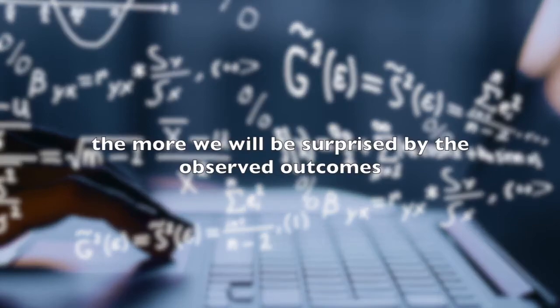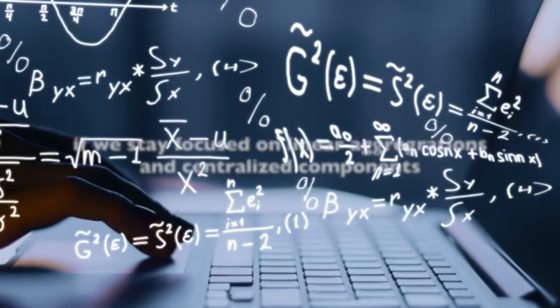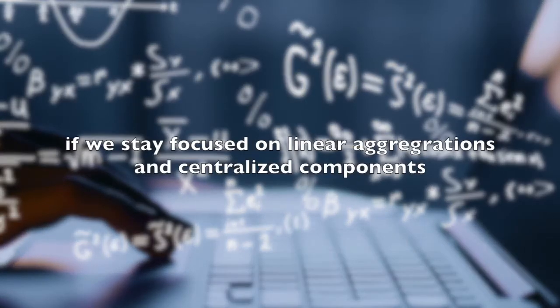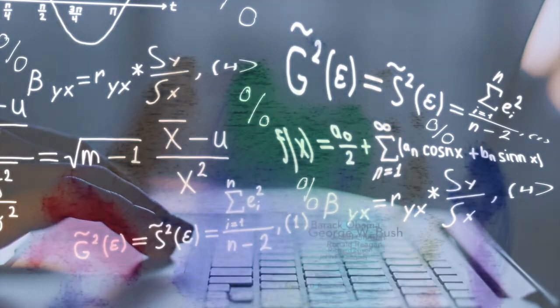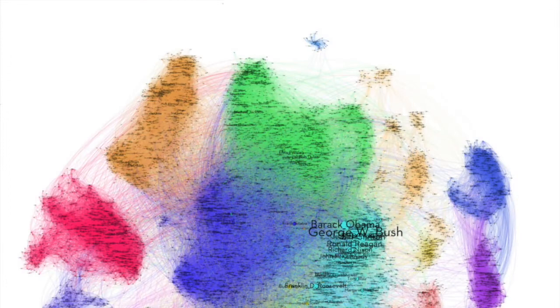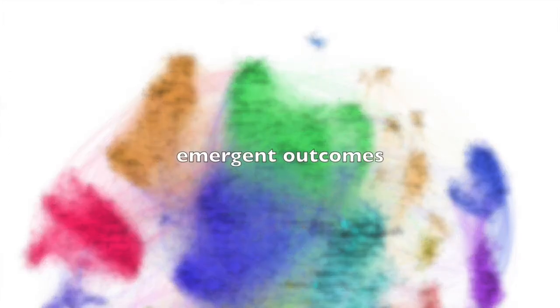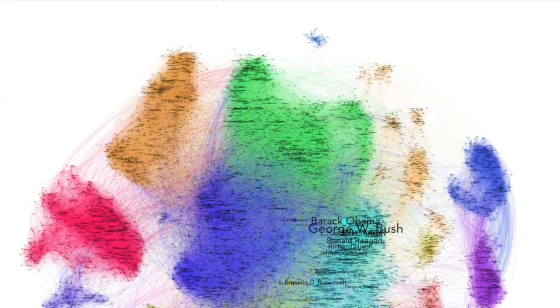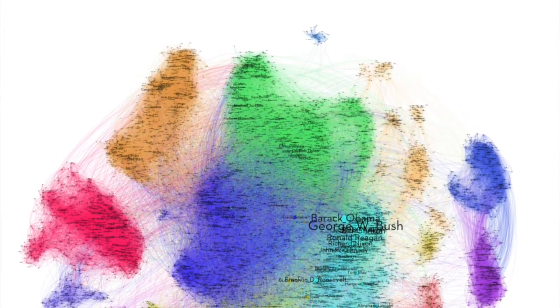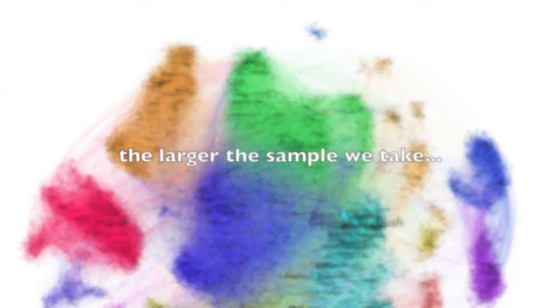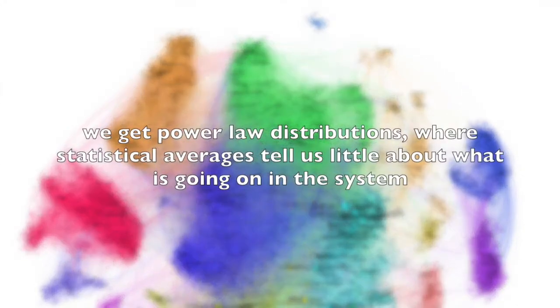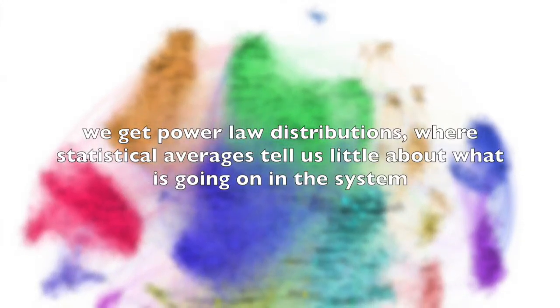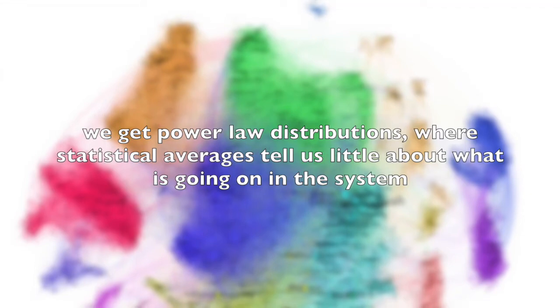The more we turn up the interconnectivity within the system, the greater the potential for nonlinear emergent outcomes, and the more we will be surprised by the observed outcomes if we stay focusing on linear aggregations and centralized components. Nonlinear distributed interactions give rise to emergent outcomes. Instead of statistical aggregations tending towards the mean or average the larger the sample we take, the opposite actually happens—we get power law distributions where statistical averages tell us little about what is going on in the system.